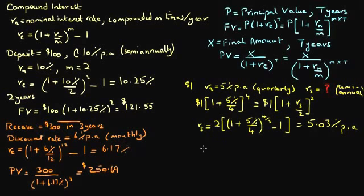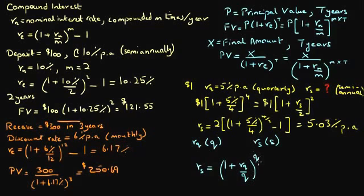So finally, we can generalize the argument as follows. If RQ is the stated interest rate with compounding frequency Q, it can be converted to interest rate RS with compounding frequency S as follows. RS equals 1 plus RQ over Q to the power Q over S minus 1, and this whole expression is multiplied by S.